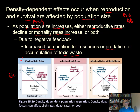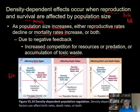Looking at the first graph, these are rates — how many per entire population size, per hundred or per thousand. Here, when population density increases on the X-axis but only birth rates are affected, you see that the rate of birth decreases as population gets bigger. The death rates stay the same. At the point where death rates and birth rates intersect, you're at equilibrium — the rates of birth and death are the same, so population density stays the same.